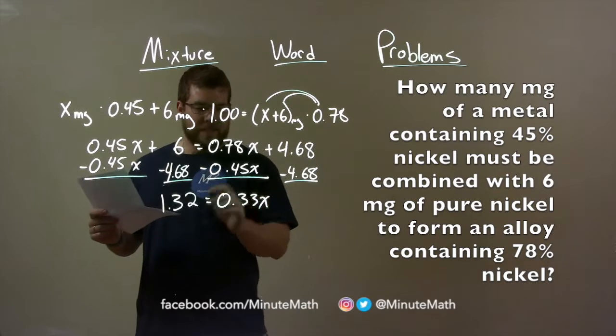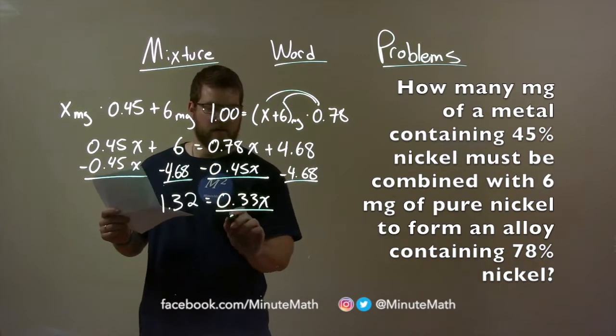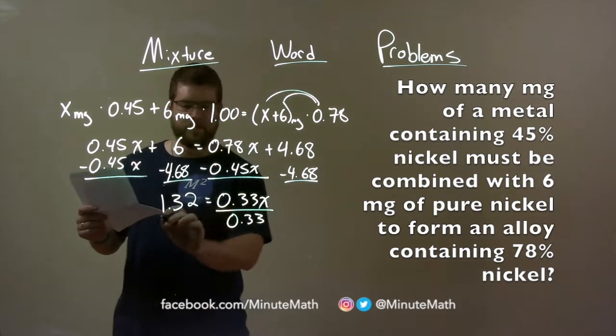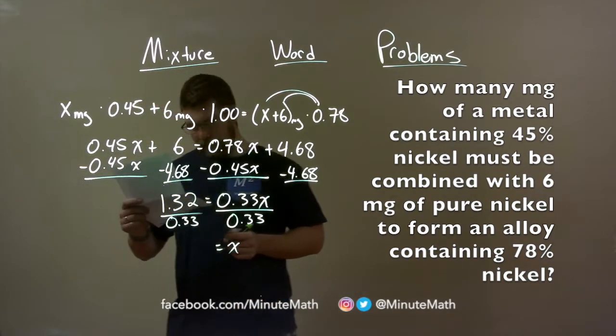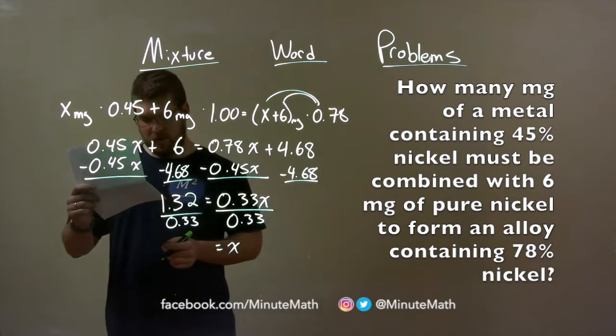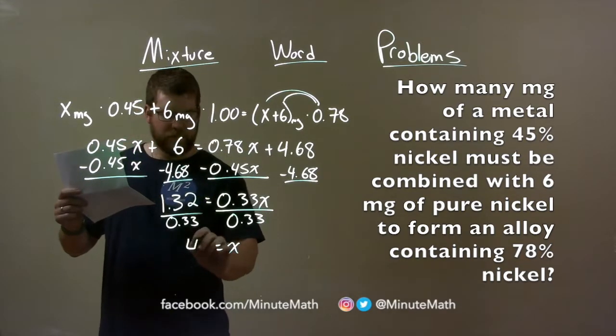Now what I want to do is get X by itself. So I divide both sides by 0.33, and X is now by itself. 1.32 divided by 0.33 is 4.